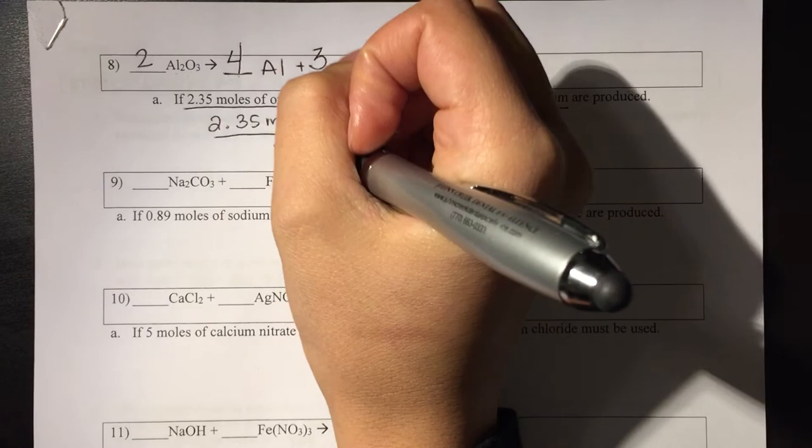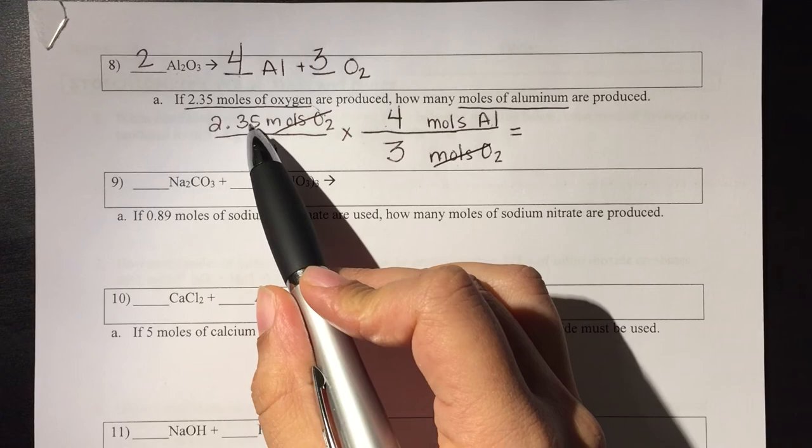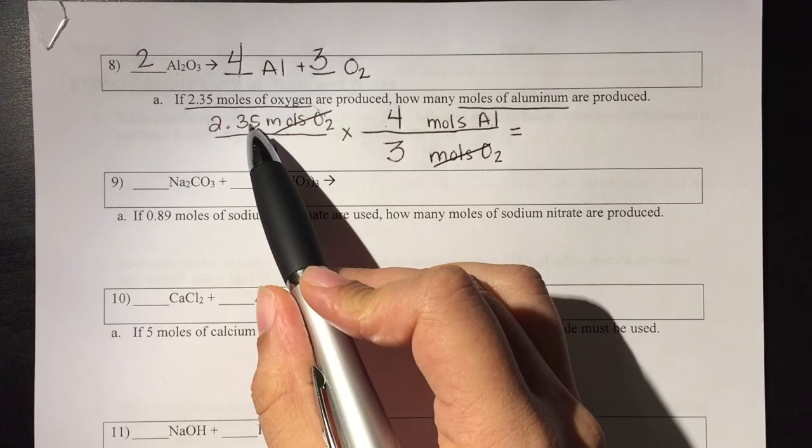So now I'm going to cross out like units. I'm going to multiply 2.35 times 4 and 1 times 3, and then I'm going to divide, and what I'm going to end up getting is 3.13 moles of aluminum.